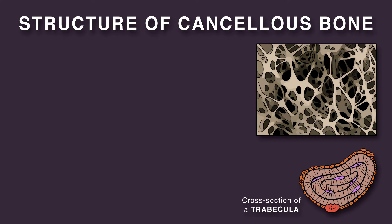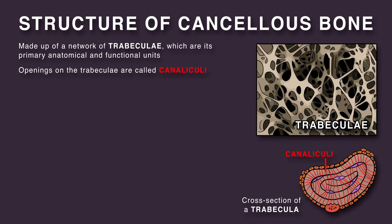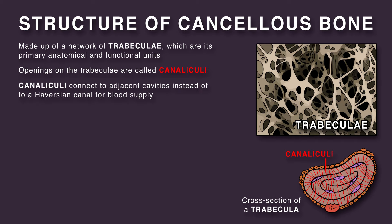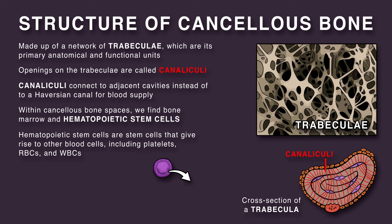Cancellous bone is made up of a network of trabeculae, which are its primary anatomical and functional units. Openings on the trabeculae are called canaliculi, and these connect to adjacent cavities instead of to a Haversian canal for blood supply. Within cancellous bone spaces, we find bone marrow and hematopoietic stem cells, which are stem cells that give rise to other blood cells, including platelets, red blood cells, and white blood cells.